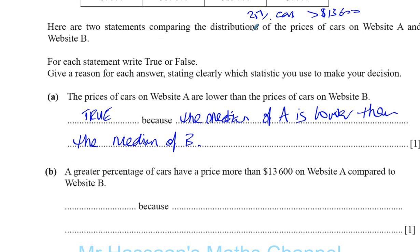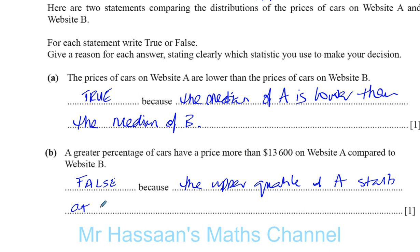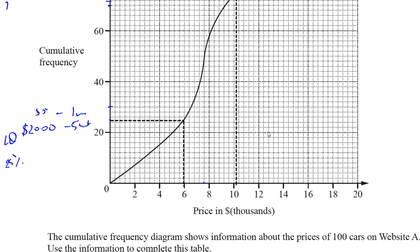So what does the statement say? A greater percentage of cars have a price more than thirteen thousand six hundred on website A compared to website B — this is false. The reason is the upper quartile of A is ten thousand two hundred, which means some proportion of that twenty-five percent is below thirteen thousand six hundred, so less than twenty-five percent of cars on website A have a price greater than thirteen thousand six hundred. That's all you need — just state false and which statistic you used. Thanks for listening.